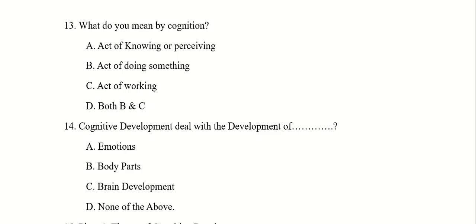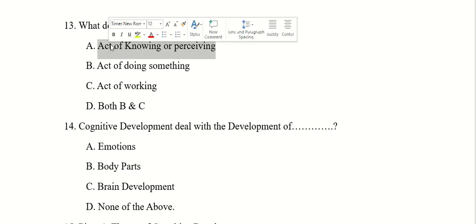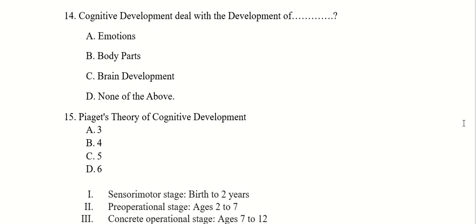What do you mean by cognition? Act of knowing or perceiving, act of doing something, act of working, both B and C. The right answer is A, act of knowing or perceiving. Cognitive development deals with the development of emotions, body parts, brain development or none of above. The right answer is C, brain development.